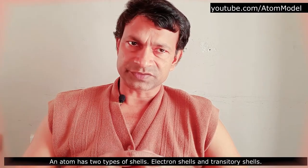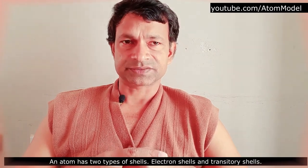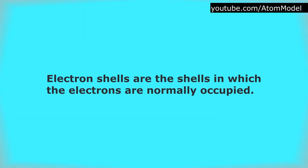An atom has two types of shells: electron shells and transitorial shells. Electron shells are the shells in which the electrons are normally occupied.